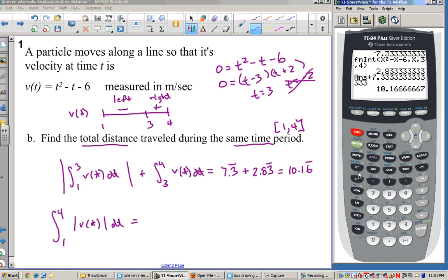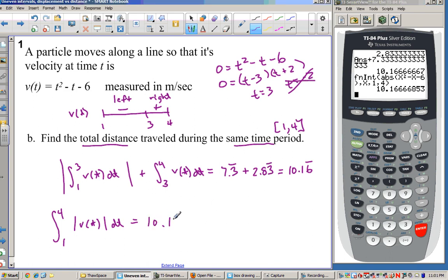So let's try that out. So we're going to do this one from scratch. So math, 9 for our integral. And now we're going to take math and go and grab absolute value. So the absolute value of my velocity function, which is x squared minus x minus 6. Close the parentheses on that. Comma, x, comma, 1, comma, 4. And there we go. There's the same answer. 10.16 repeating was the total distance traveled.